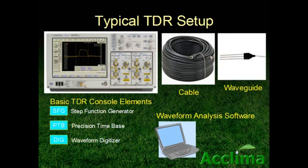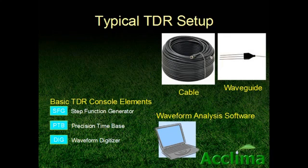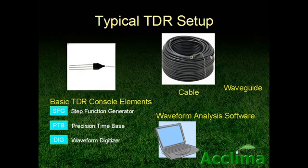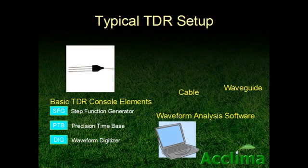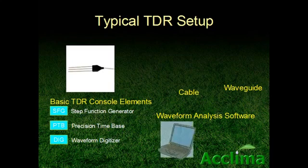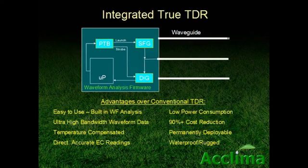We can improve this picture. Let's take the simple necessary elements out of this box — then we can throw away the other expensive stuff. Since these elements are small and can be placed in a small waterproof package, let's couple them directly with the waveguide. Then we can throw away the bandwidth-limiting cable, and also throw out the PC and the waveform interpretive software. Here's what we get: an integrated true time domain reflectometer.